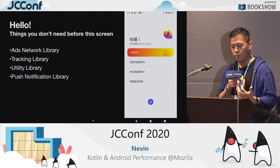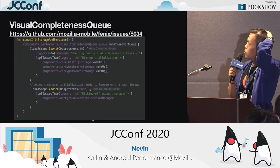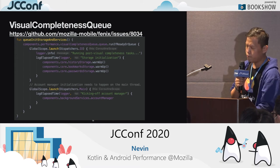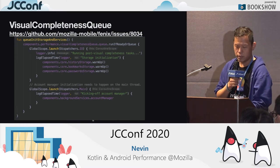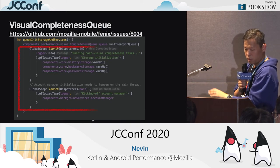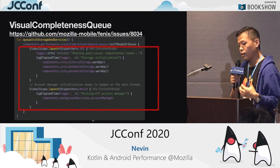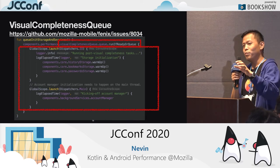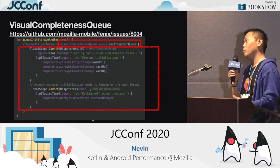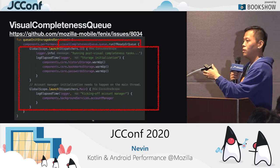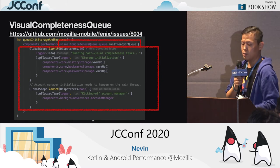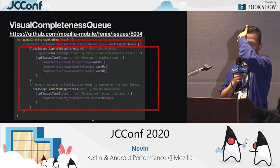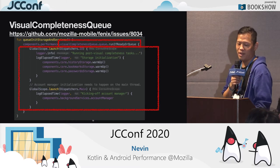If you want to see the implementation, you can go to the GitHub issue. I'll show you how it works — it's just about five to ten lines of code, pretty straightforward. Basically, you put all the library initialization work into a queue. When the tasks in the queue get executed, all the view hierarchy has callbacks. Before pre-draw, we wait a couple of frames, and then we do whatever can be done after the user sees the first screen. This is the strategy we used, and at the end, the app is as fast as the demo app. And it worked.